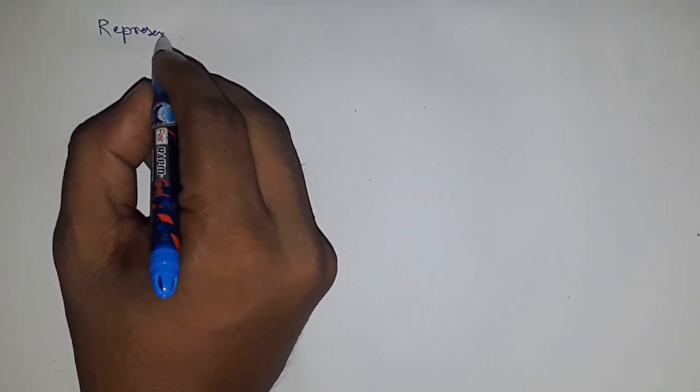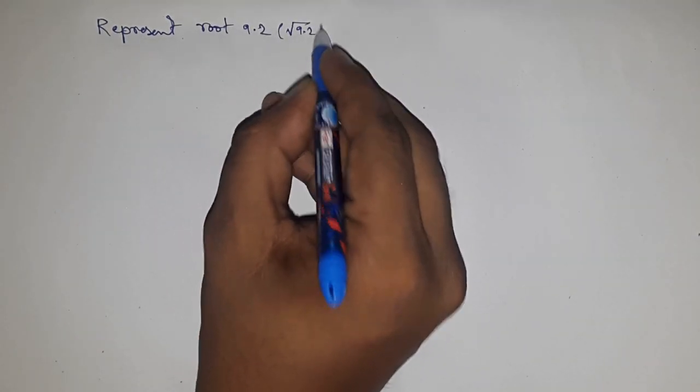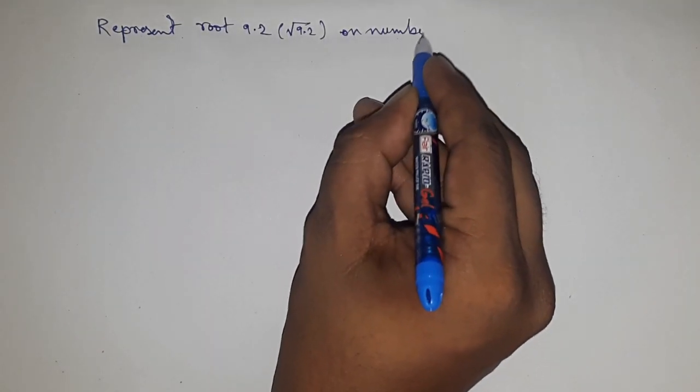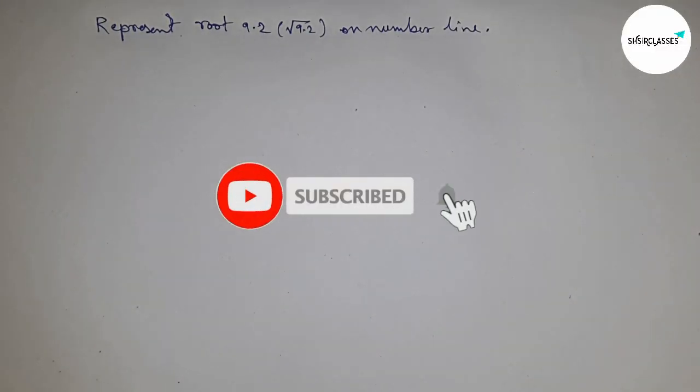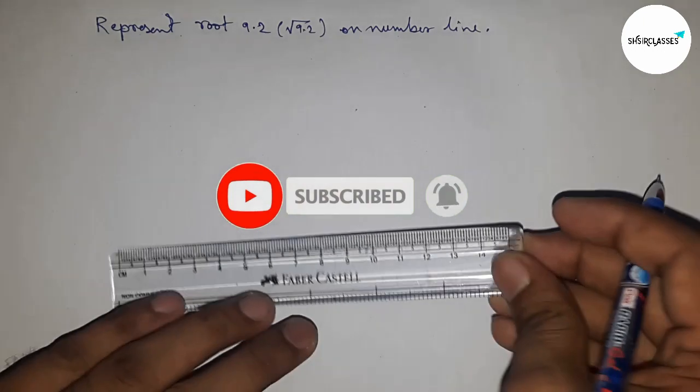Hi everyone, welcome to Accessory Classes. Today we're talking about the representation of √9.2 on the number line. Before starting the video, please subscribe to the channel and press the bell icon for future video notifications.